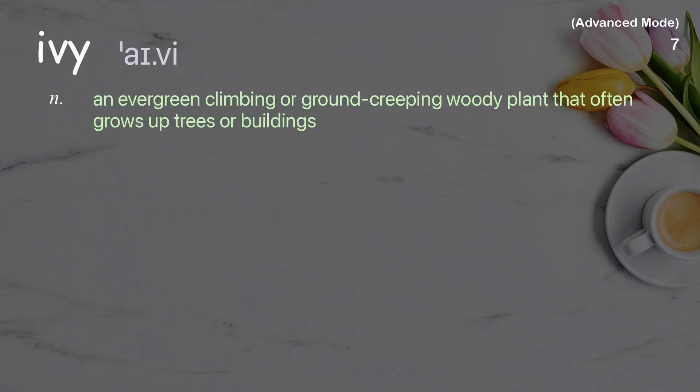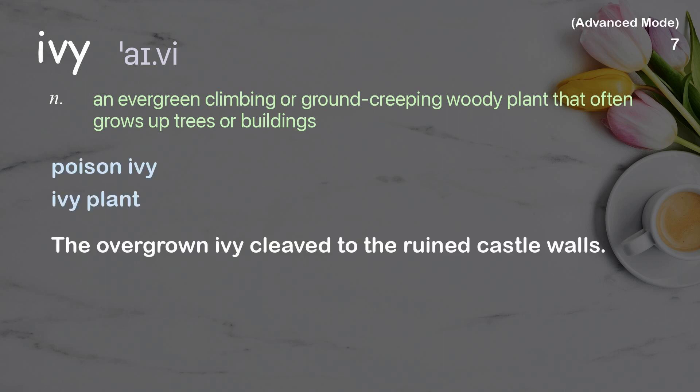Ivy: an evergreen climbing or ground-creeping woody plant that often grows up trees or buildings. Examples: poison ivy, ivy plant. The overgrown ivy cleaved to the ruined castle walls.